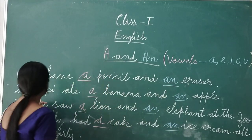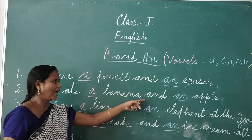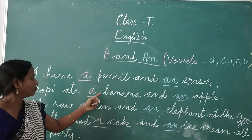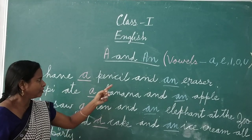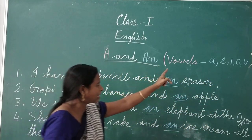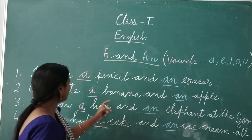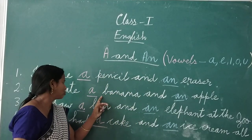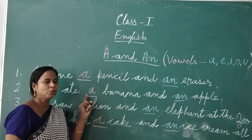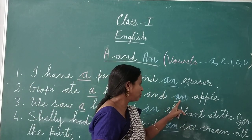Next sentence: Gopi ate a banana and an apple. Here, banana starts with consonant B. So we use 'a' before banana. And apple starts with vowel A, so we use 'an' before apple. Before a consonant we use 'a', and before a vowel we use 'an'.